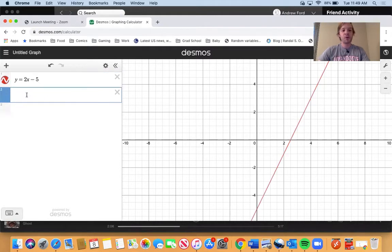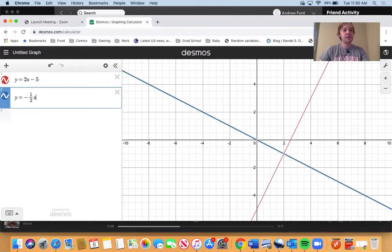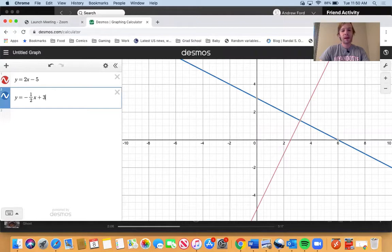We can have more than one equation on here. Let's say y equals negative one half x plus 3, and so now we have two lines on here.